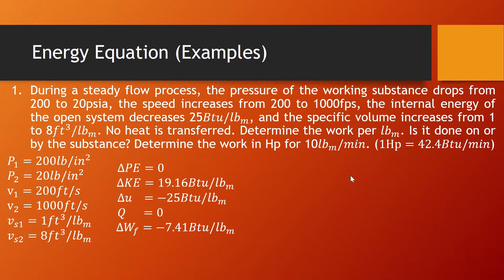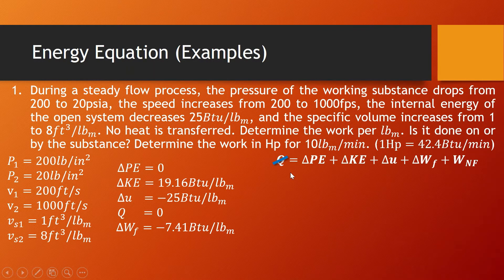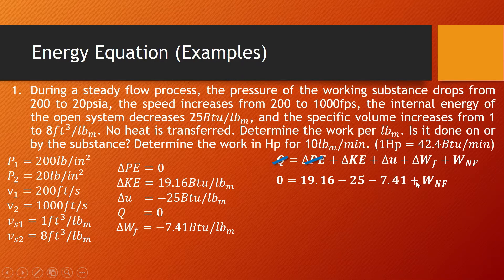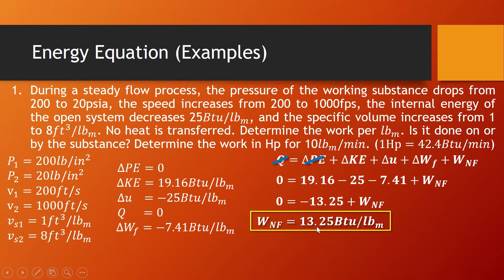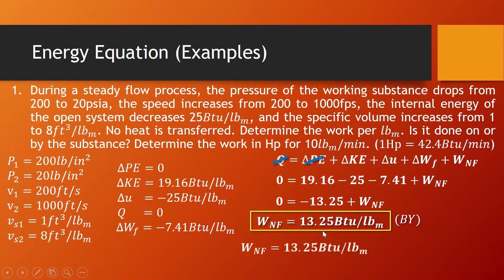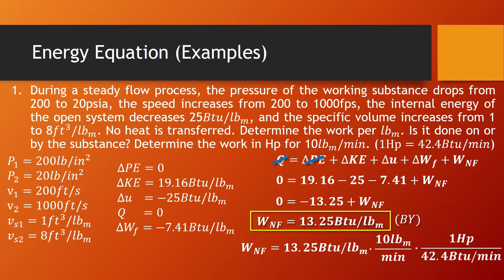Using the law of conservation of energy equation, with Q equal to zero and change in PE equal to zero: 0 equals 19.16 minus 25 minus 7.41 plus non-flow work. These values equate to negative 13.25 plus non-flow work, so non-flow work is positive 13.25 BTU per pound mass. This work is done by the system since it is positive — that is an outflow of energy. Multiplying by the mass flow rate of 10 pound mass per minute, and converting using 1 horsepower equals 42.4 BTU per minute, the non-flow work is equal to 3.125 horsepower.